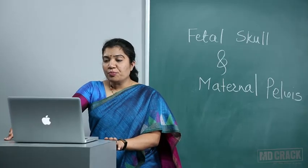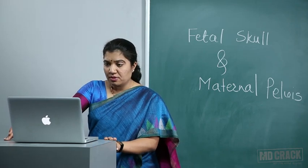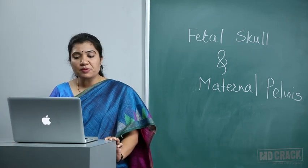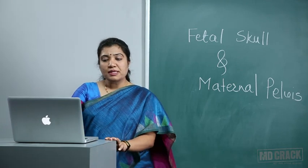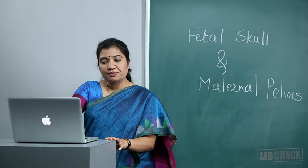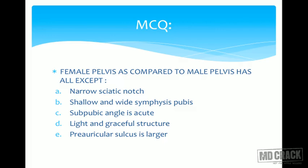MCQ example: Female pelvis compared to male pelvis has all except — options include narrow sciatic notch, shallow and wide symphysis pubis, subpubic angle is acute, light and graceful structure, preauricular sulcus is large. The answer is narrow sciatic notch and acute subpubic angle are features of male pelvis, not female.